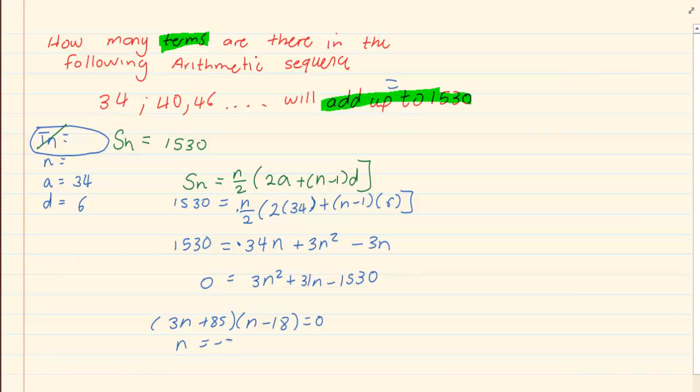If we solve, we have n is equal to minus 85 over 3 and n is equal to 18. Now because n is a whole number, it is a position of terms. It cannot be a negative. n is always a whole number and always positive. Therefore this one is not accepted. Our final answer is n is equal to 18. So how many terms are there in the following arithmetic sequence? There are 18 terms in the following arithmetic sequence. Thank you for watching.